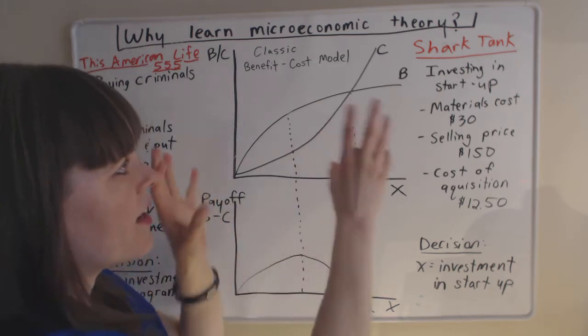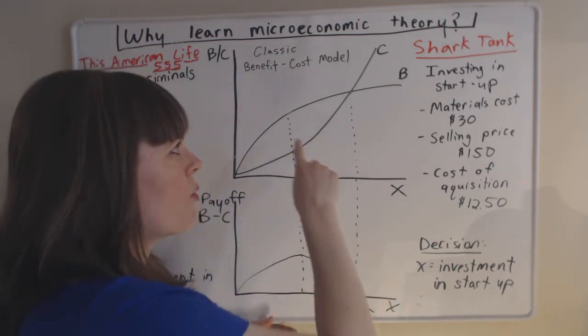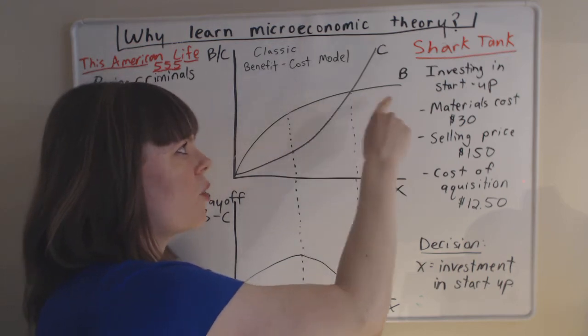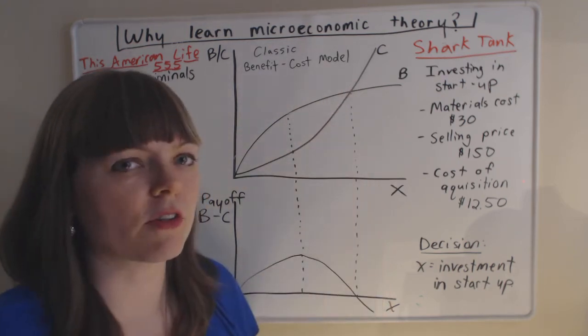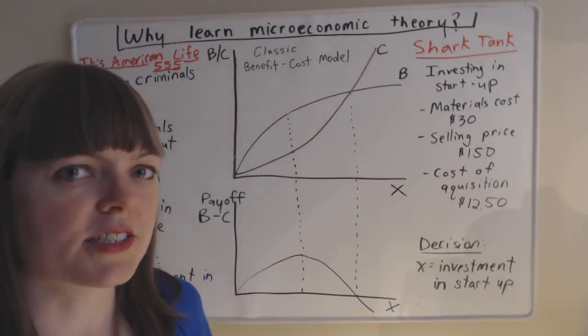And really when we use this to make decisions, we're really going to be thinking about which one of these is more powerful, the diminishing marginal benefit part or the increasing marginal cost part.